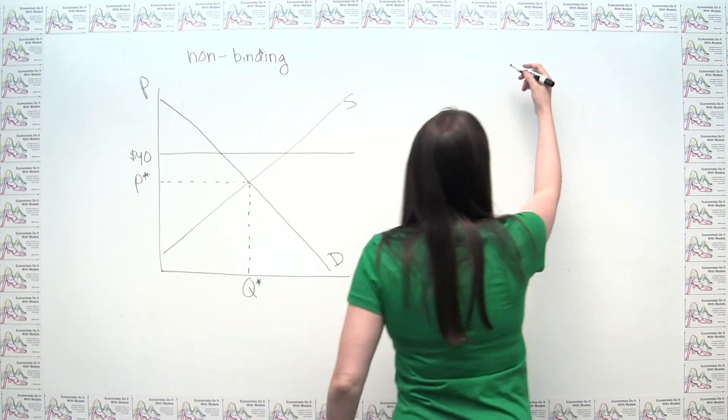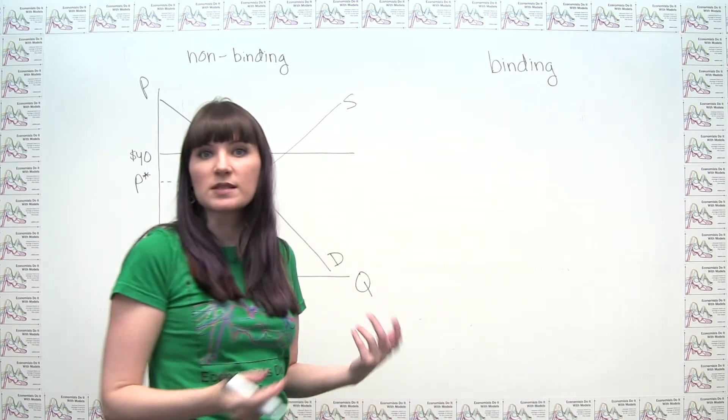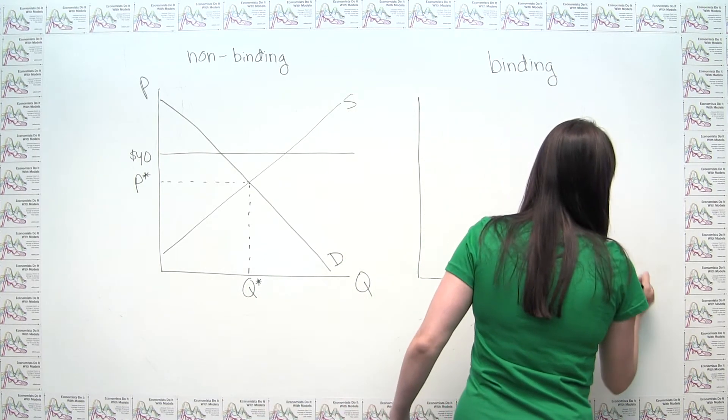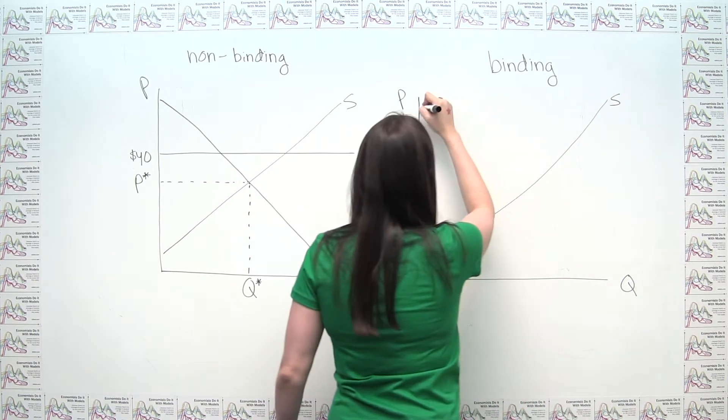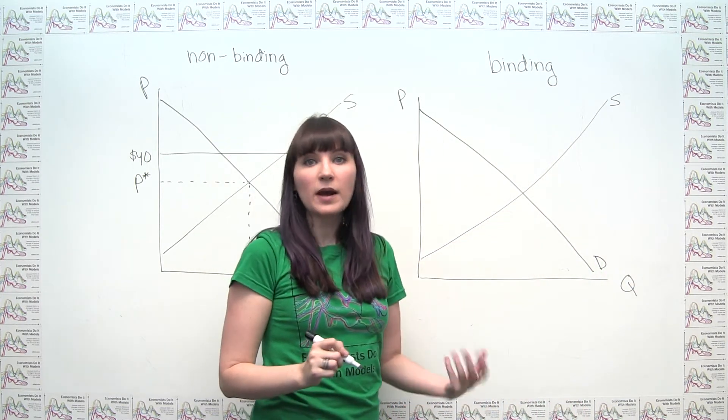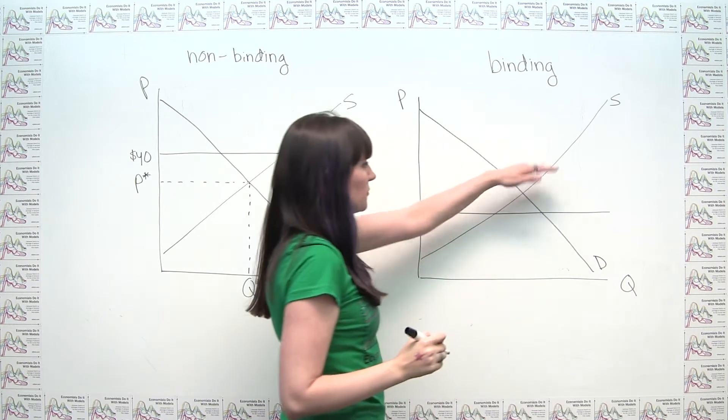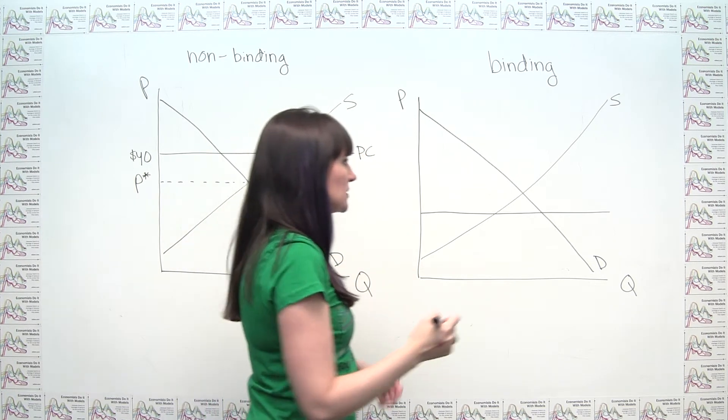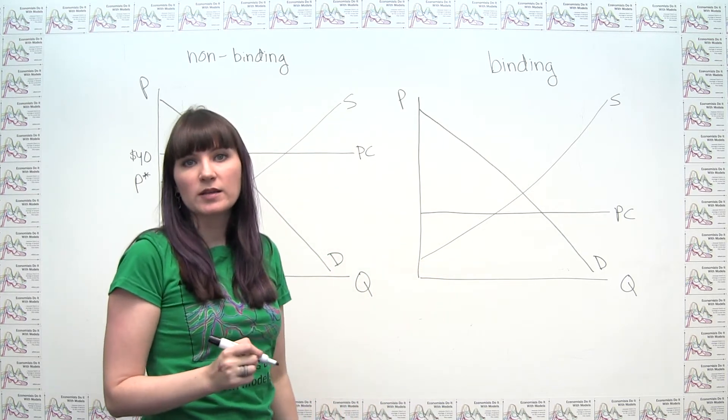Now let's think about the opposite case, where we actually have what's called a binding price ceiling. These are the ones that matter. And again, we can start with our supply and demand diagram. Now, again, I'll just draw supply and demand normally. A price ceiling that's going to be binding is one that's below the current free market equilibrium price. So if we were to, and we could label these guys as our price ceiling, just like this. Our price ceilings are still represented by horizontal lines on our supply and demand diagram.